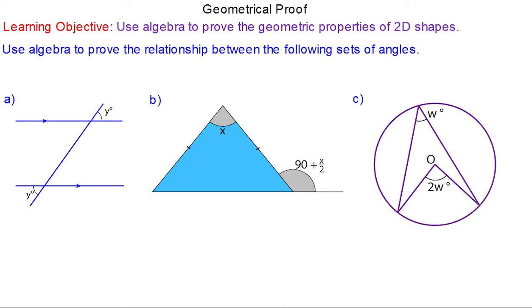In this lesson we're going to use algebra to prove the geometric properties of 2D shapes. In question one we've got angles in parallel lines and y is vertically opposite to y. So property number one, vertically opposite angles are equal which is why the two y's are equal.